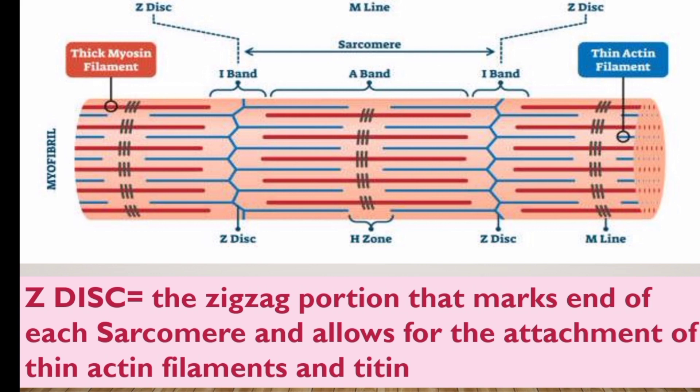The blue color represents the thin actin filament. The thin blue actin filament is connected to the Z-lines, also called the Z-disc. The zigzag portion that marks the end of each sarcomere and allows for the attachment of thin actin filaments and titin are called Z-disc or Z-lines.